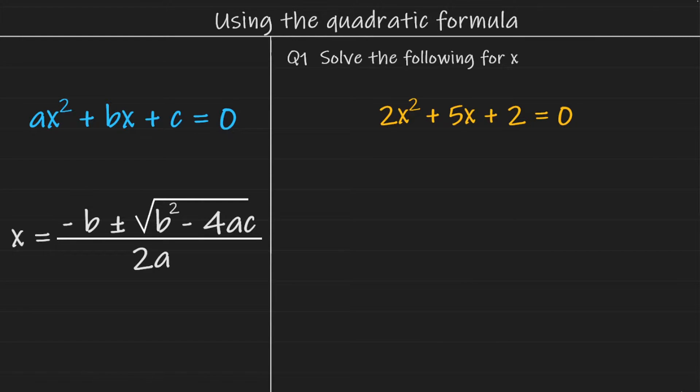Okay, so here on the left, we have the general form for a quadratic expression, ax squared plus bx plus c, and it is equal to zero.